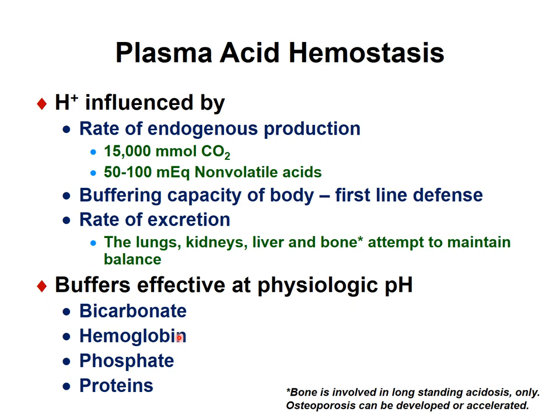Hemoglobin concentration does not change as fast as bicarbonate, so we generally do not consider it when evaluating acid-base balance. However, if someone has anemia — a lower hemoglobin concentration — that can affect the acid-base balance, meaning a certain amount of acid production will influence the pH more readily compared to situations with a normal hemoglobin concentration.